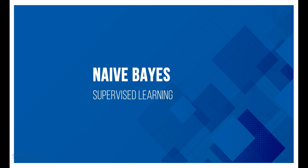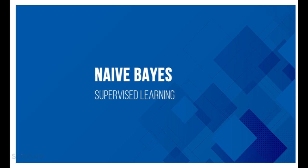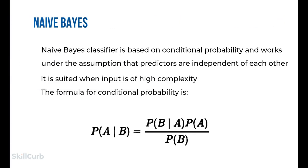Naive Bayes is a simple but surprisingly powerful algorithm for predictive modeling. It is a classification technique based on Bayes' theorem with an assumption of independence among predictors. A naive Bayes classifier assumes that the presence of a particular feature in a class is unrelated to any other feature. For example, a fruit may be considered an apple if it is red, round, and about 3 inches in diameter — these properties independently contribute to the probability. Naive Bayes is easy to build, useful for very large datasets, and known to outperform even highly sophisticated classification methods.